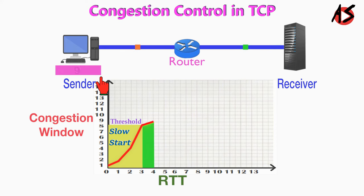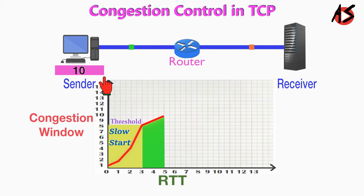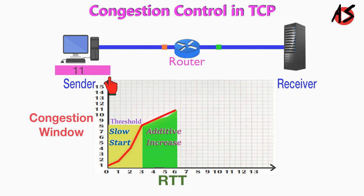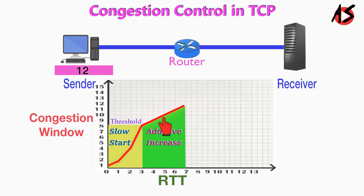So now the congestion window is nine. The sender TCP sends nine segments, and once these are all acknowledged, the congestion window adds by one — that's ten. Similarly, after each round trip time, it becomes eleven, then twelve. In the congestion avoidance algorithm, the size of the congestion window increases additively until congestion is detected, as you can see in the graph.